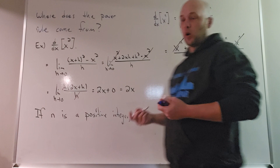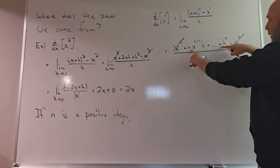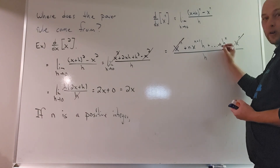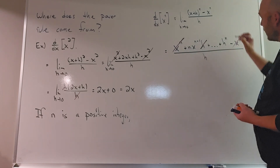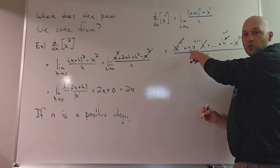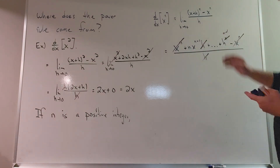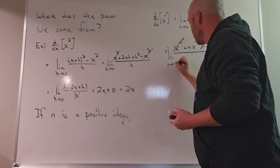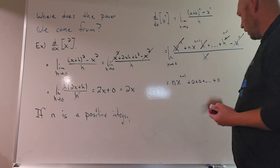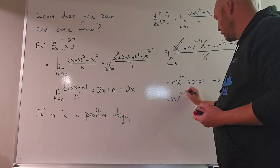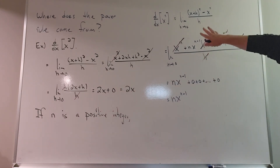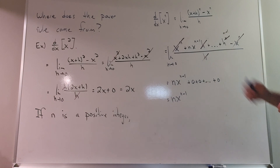After cancellation with the h in the denominator, the only term without a remaining factor of h is n·x^(n−1). All other terms have factors of h, h², up to h^(n−1). Taking the limit as h approaches 0, those all vanish, leaving n·x^(n−1). I didn't go through all the details of the binomial theorem, but that's the idea, and it applies when n is a positive integer.